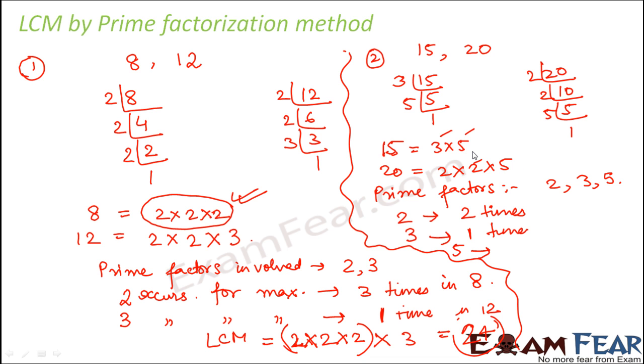What about 5? 5 occurs 1 time in both 15 and 20. So the maximum number of times that 5 occurs is also 1 time. In each case it is like 1 time, 1 time. So it is 1 time.